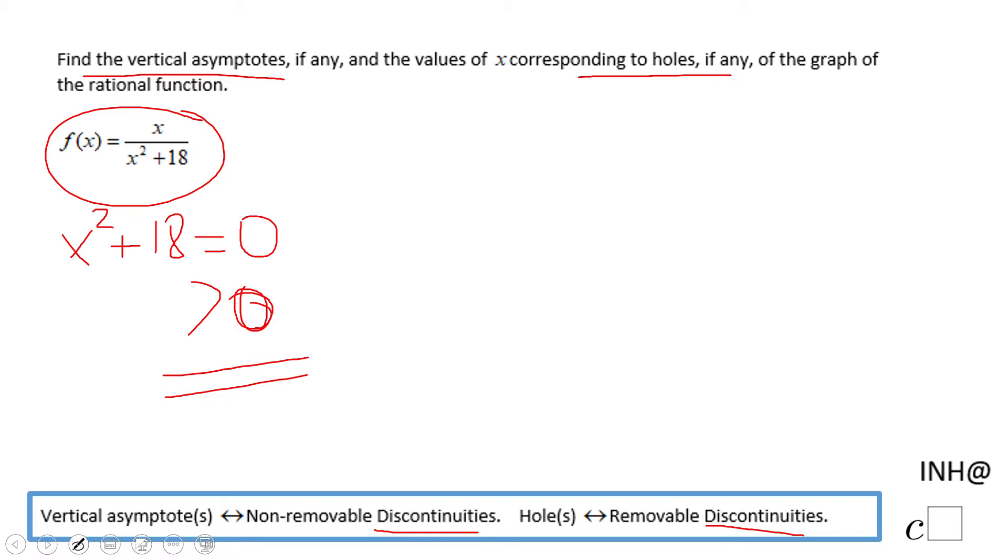So we do not have any value of x for which it equals zero. Therefore, we have no vertical asymptotes and no holes for this problem.